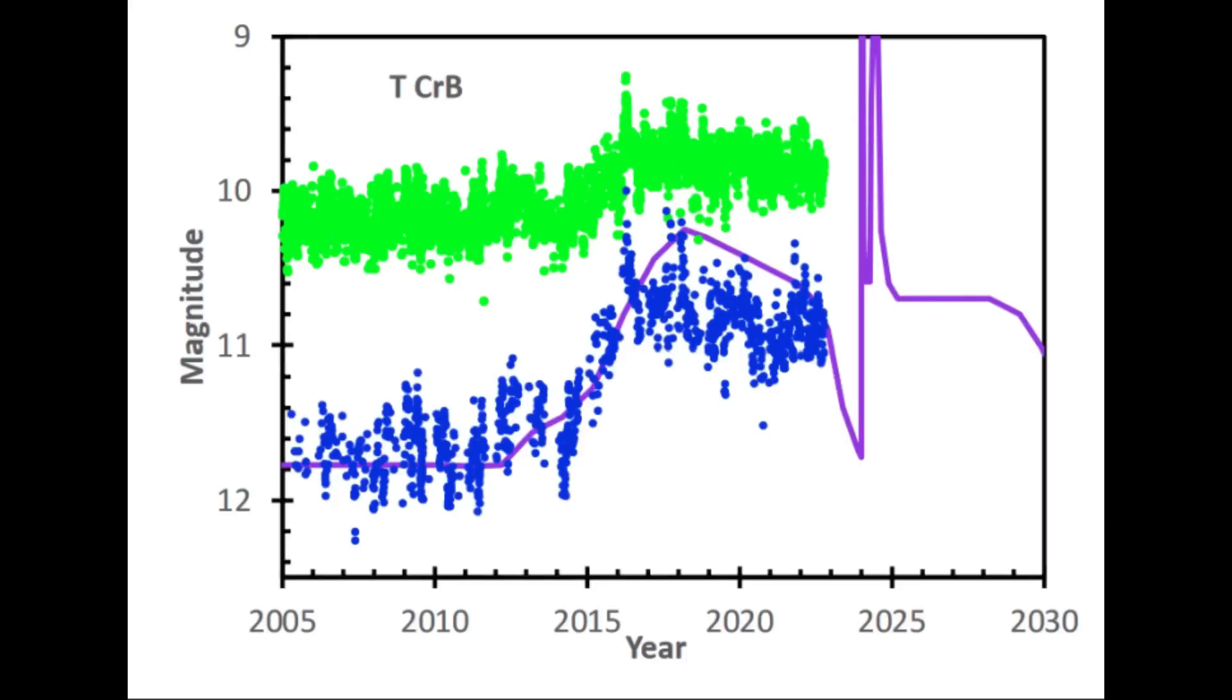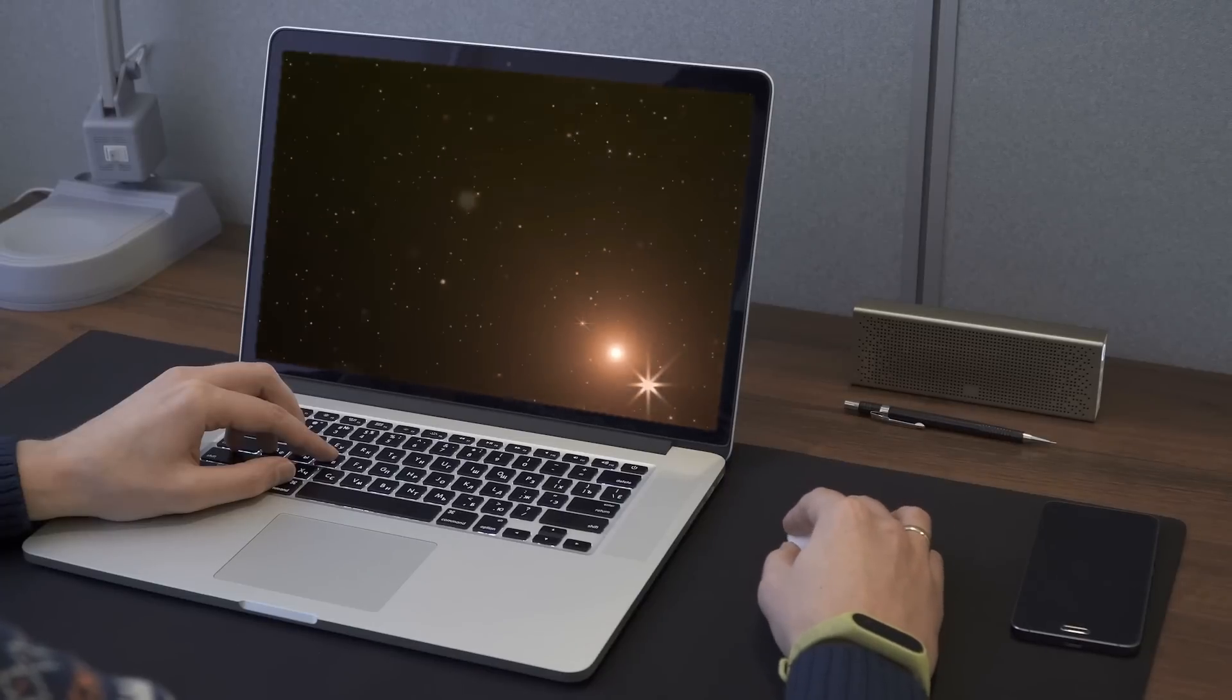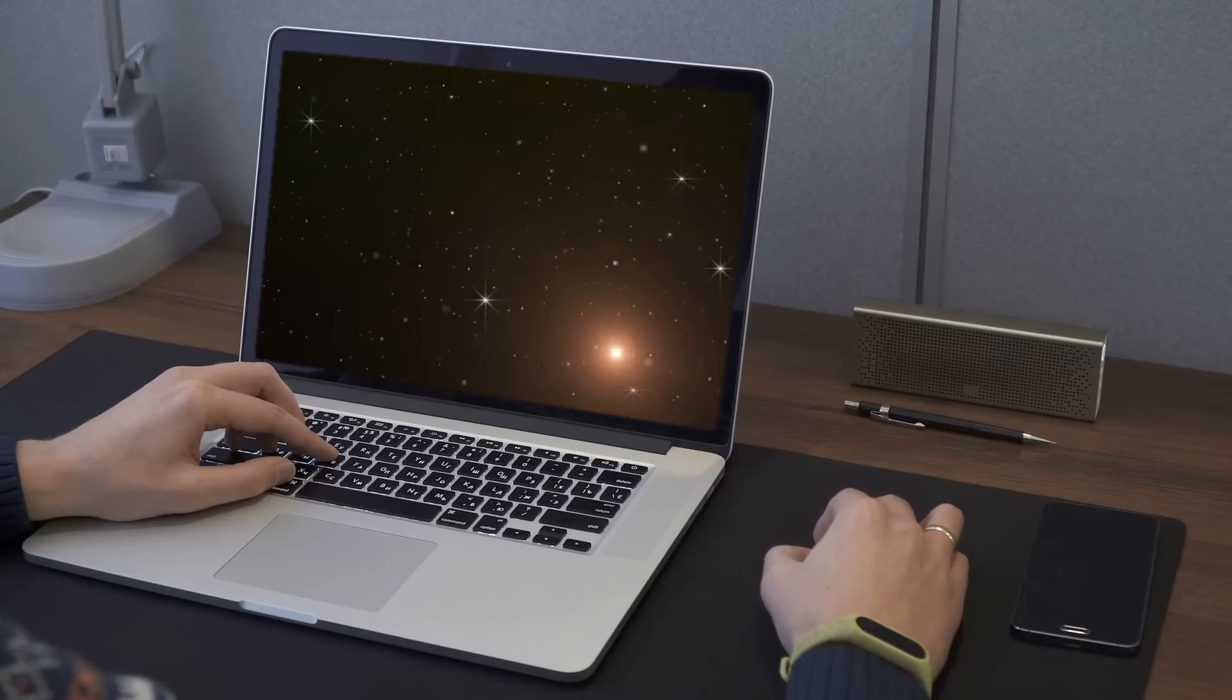The star entered its high state in 2015, and the pre-eruption dip was detected in March 2023, which has put astronomers on alert. The reasons behind these patterns remain some of the intriguing mysteries surrounding TCRB.